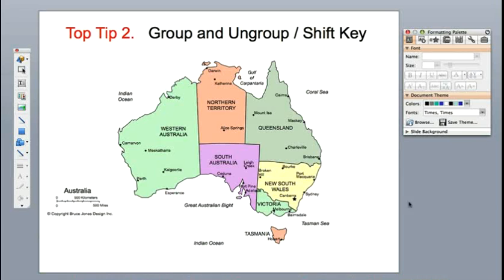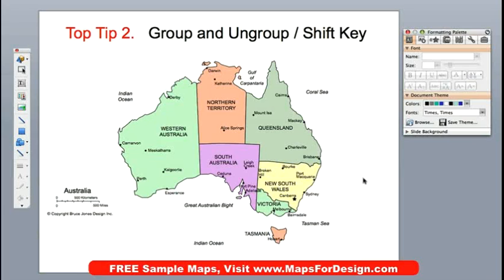The second element today that we're going to talk about in our favorite tips is using group and ungroup. This is done in combination with the shift key. Grouping and ungrouping really helps you deal with all the little elements in a map.